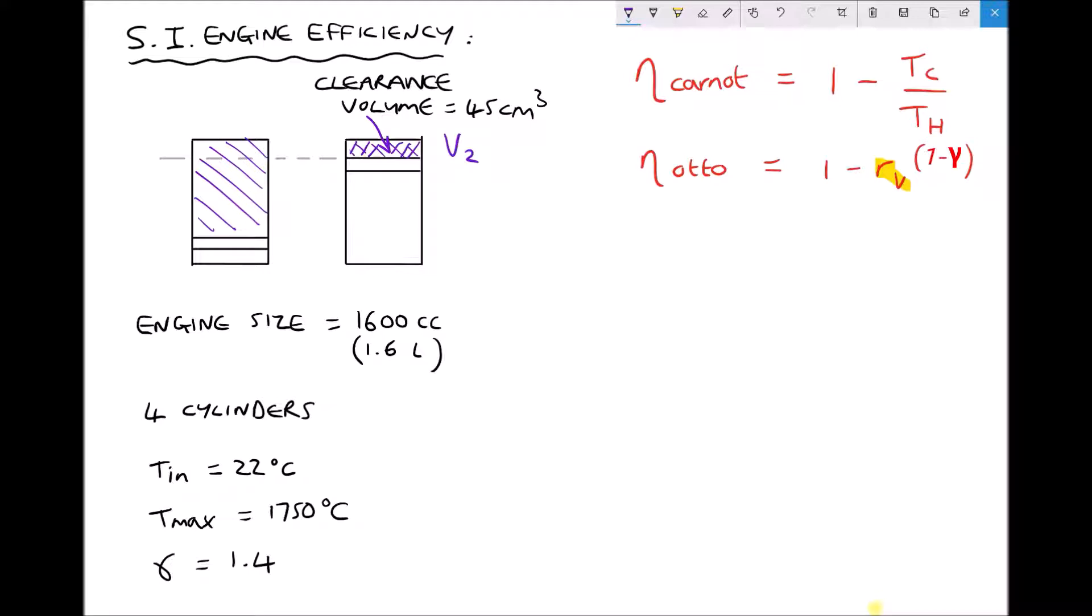To determine the volume when the piston is in its lower position, we need to introduce another variable. The area above the dashed line is our clearance volume, but we don't know the volume underneath the dashed line. The volume underneath has a specific name: the swept volume of the cylinder. The swept volume is the change in volume when we go from position one where the piston's at the bottom to position two where the piston's at the top.